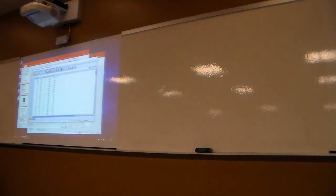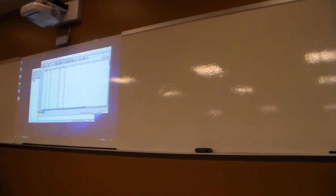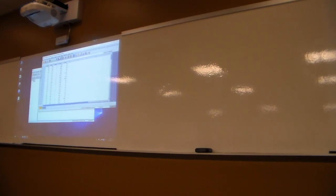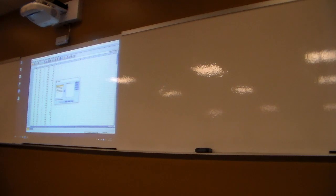First thing we're going to do — and as I'm doing this, I strongly encourage you all to be saving commands into a syntax file. The syntax file for one regression is going to be pretty similar to the syntax for another. This is a nice way to speed things up. First thing I want to do, if I'm concerned about accuracy and plausibility, is start to request my frequencies. I've got a dichotomous indicator, so for that opiate variable, what am I going to be looking at?